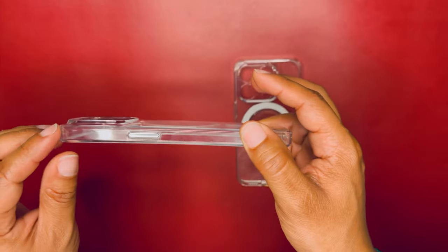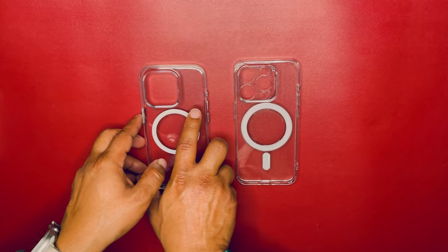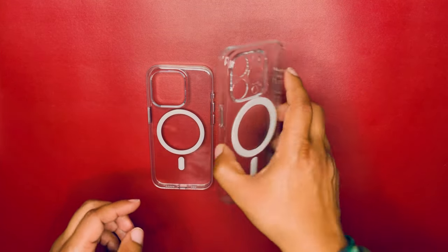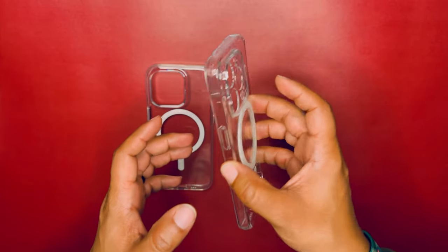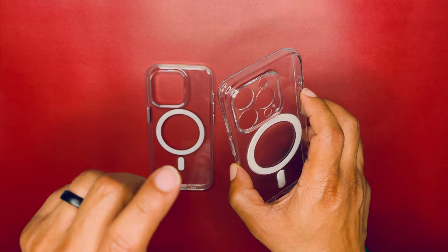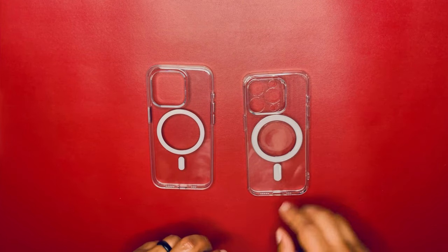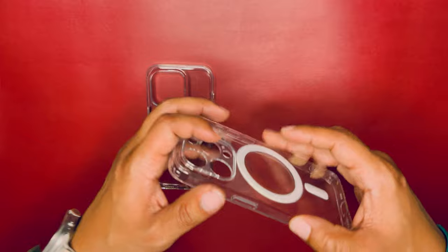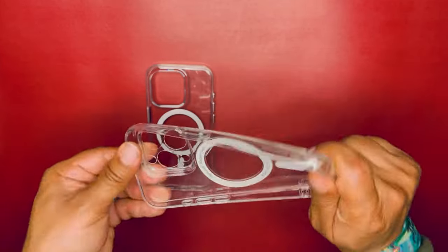The ESR case that I just picked up - this whole thing is TPU, so this is definitely a real grippy case. It's actually thinner than this one as well. The ESR case is 1.2 millimeters thin. This thing is real thin, you could bend this. It's a thin case, real minimalistic.